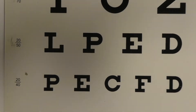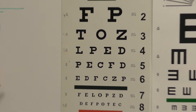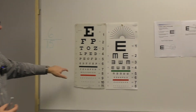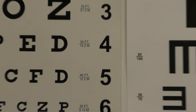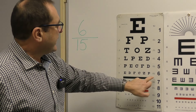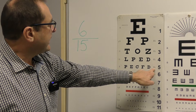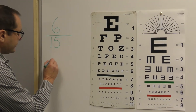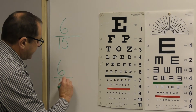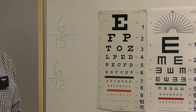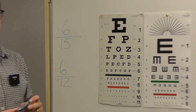If the patient is standing 6 meters from the chart and can read up to line number 5, which corresponds to 12 meters on the metric side, then the visual acuity is 6/12. This means the patient can read at 6 meters what a normal patient can read at 12 meters.